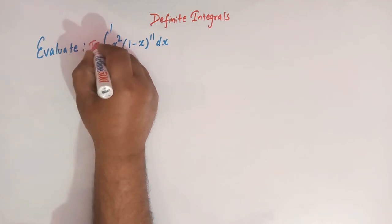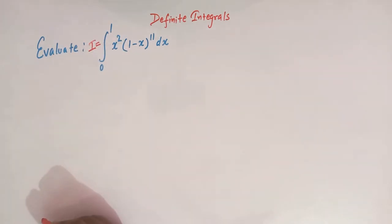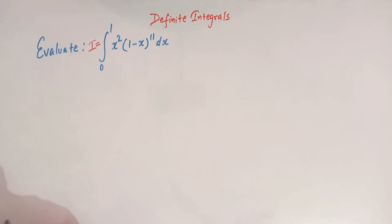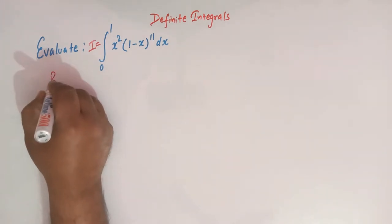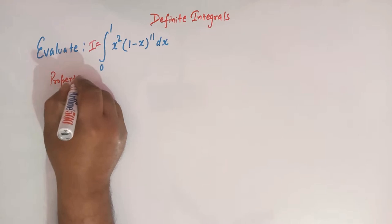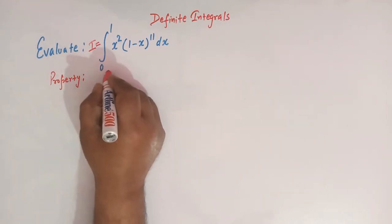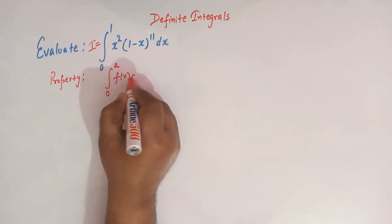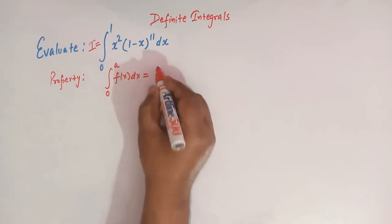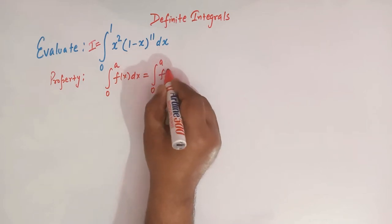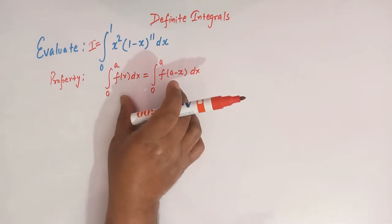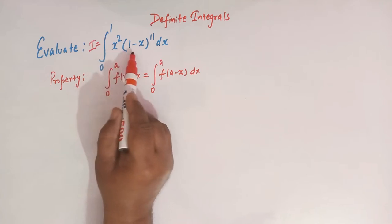Let us first call this integral as I. We are going to solve this definite integral by making use of the properties of definite integrals. We'll use an important property which says that if we have the integral from 0 to a of f(x) dx, then this integral can be written as the integral from 0 to a of f(a minus x) dx.